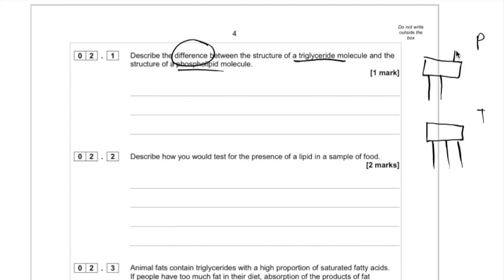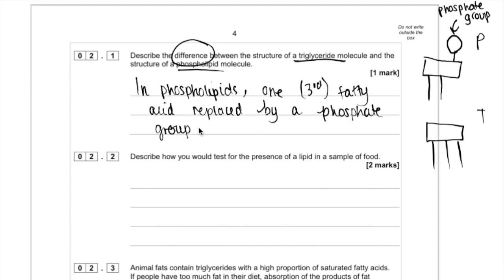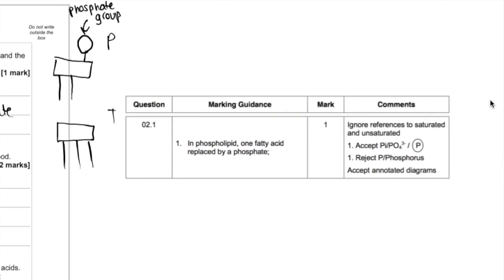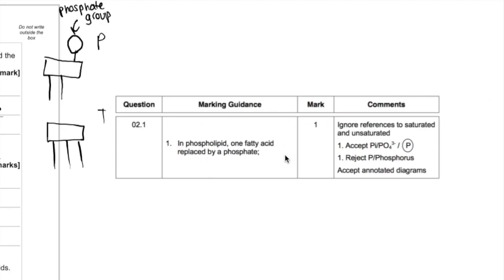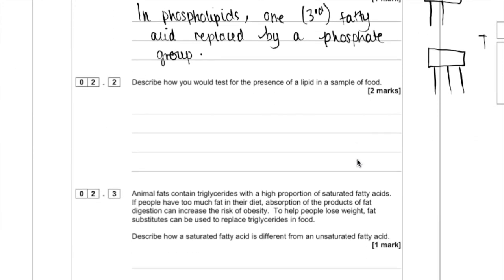But instead of the third one, instead there's a phosphate group. So here's how we're going to phrase our answer. Let's have a look at the mark scheme to confirm that. There we go. In phospholipids one fatty acid is replaced by phosphate. Note that they haven't let you have the mark for phosphorus. You have to say a phosphate or a phosphate group.